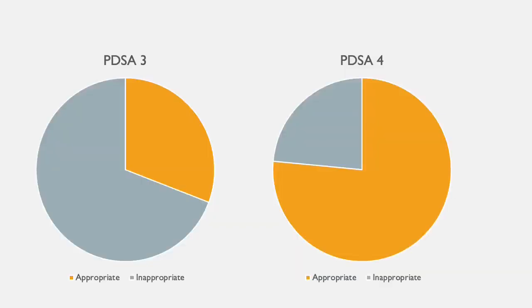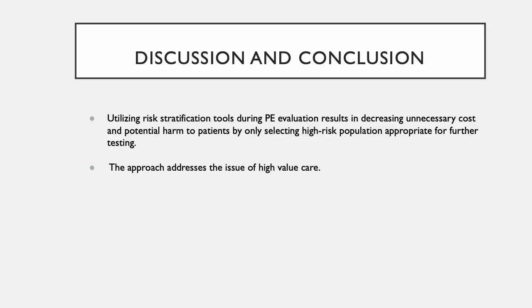Here is a pie chart outlining the PDSA-3 and PDSA-4 cycles that were used. For our discussion and conclusion, utilizing risk stratification tools during PE evaluation results in decreased unnecessary costs and potential harm to patients by only selecting the high-risk population appropriate for further testing. This approach addresses the issue of high-value care.